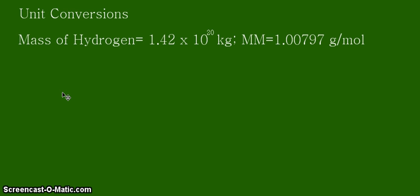We calculated before that the hydrogen in the ocean is approximately 1.42 times 10 to the 20 kilograms. That's a lot of hydrogen in the ocean. In this video we are trying to calculate the amount of hydrogen in moles, or the moles of hydrogen atoms in that certain mass of hydrogen in the ocean.